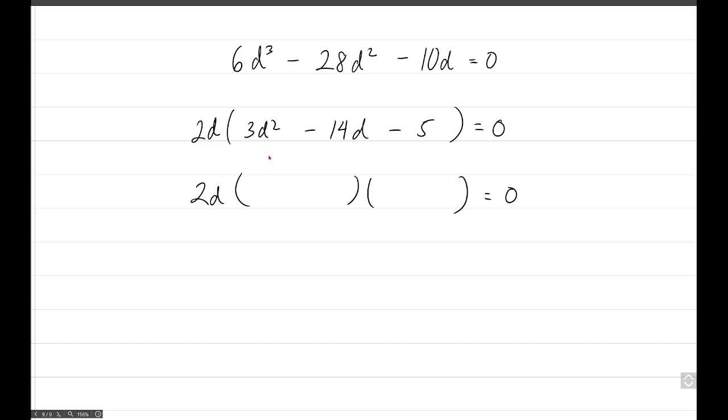3d squared? Fortunately, that number 3, the only way to really multiply to get the 3 is a 3 and a 1. So 3d there, d there, and then 5. Maybe it's a 5 here and a 1 there, or you have to switch those.